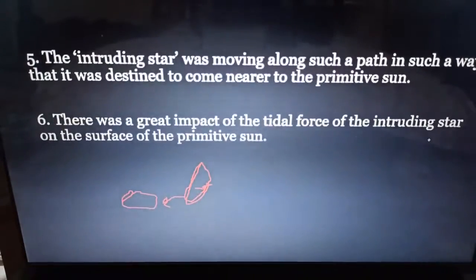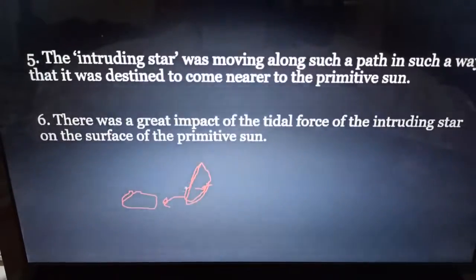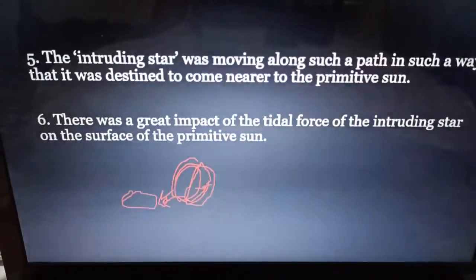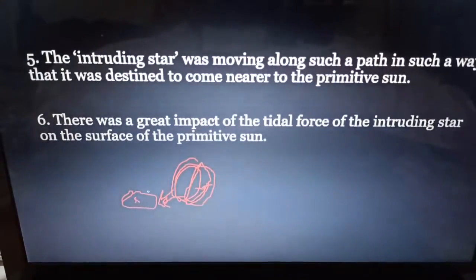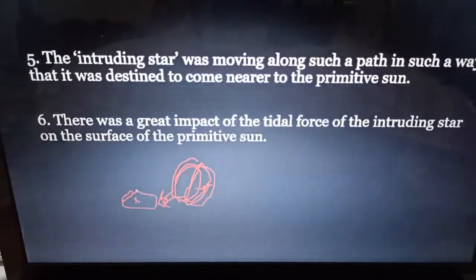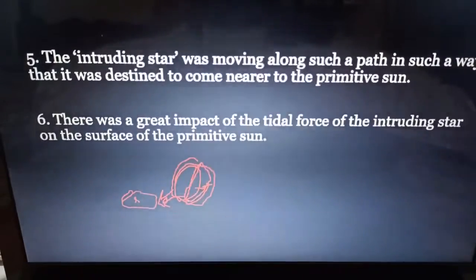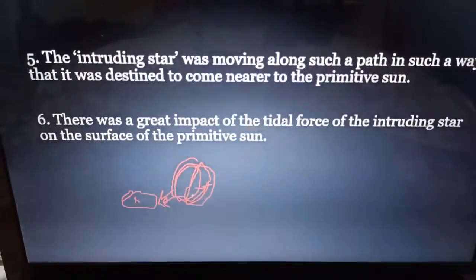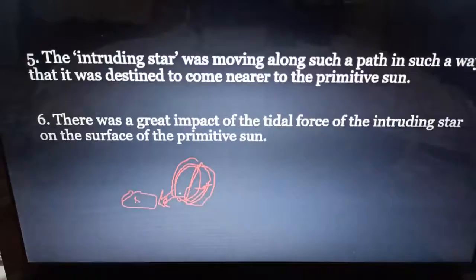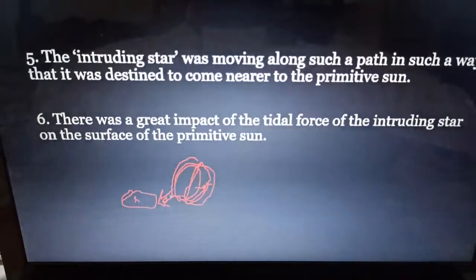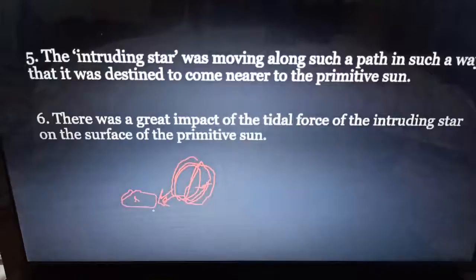There was a great impact of the tidal force of the intruding star on the surface of the primitive sun. When the intruding star came very much closer to the primitive sun, all the stars and planets were born from this effect. This tidal force arose because the intruding star's gravitational force was much more powerful than our sun, causing it to attract materials of the sun towards itself.